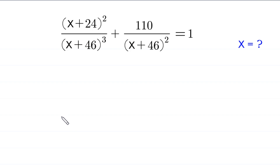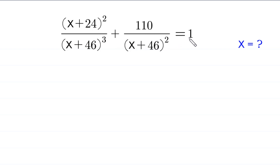Hello everyone, you are welcome to how to solve this very nice algebra equation. x plus 24 whole squared divided by x plus 46 whole cubed, plus 110 divided by x plus 46 whole squared, is equal to 1. Our job is to find all possible values of x.